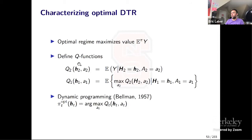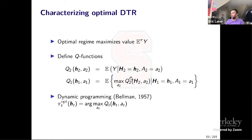Q1 is the expected outcome for a patient presenting at time one with history H1, treated with A1, and then treated optimally in the future. From dynamic programming, the optimal regime PI_t^opt(H_T) is the argmax over all treatments A_T of Q_T(H_T, A_T). This immediately suggests a strategy for estimation: Q2 is just the regression of Y on H2 and A2. We can estimate that using regression methods, then plug in Q-hat-2 and regress the maximized Q-hat-2 on H1 and A1.